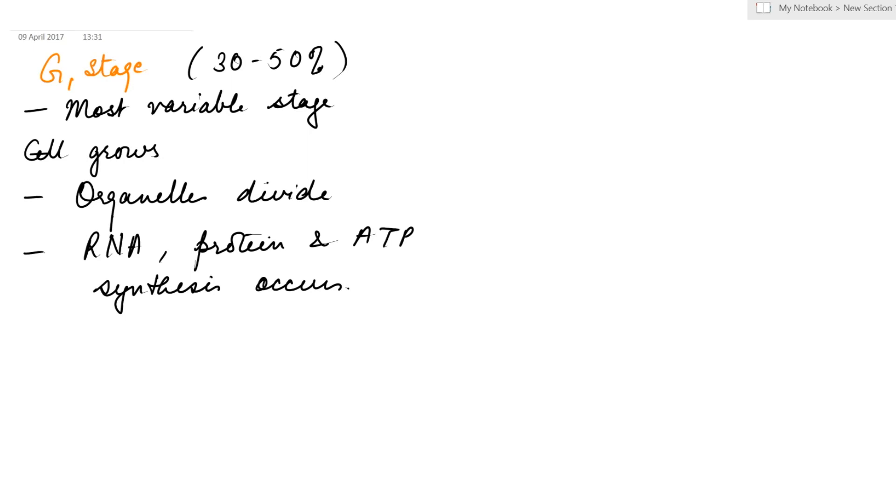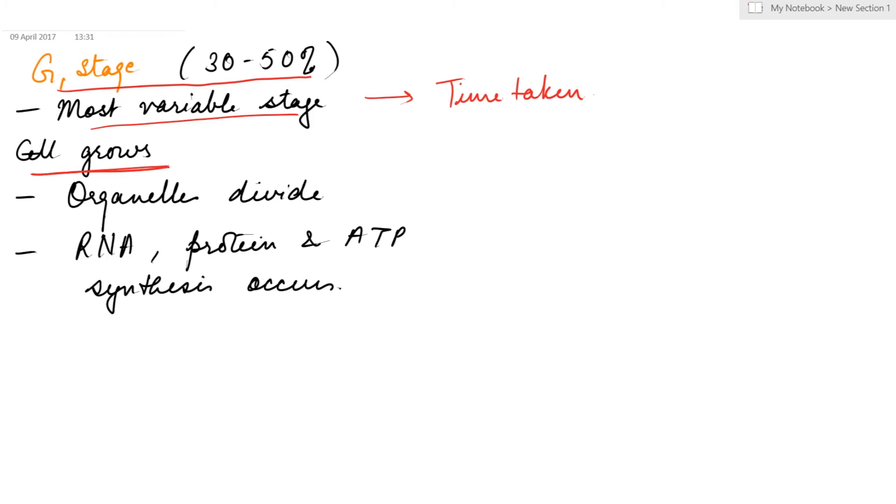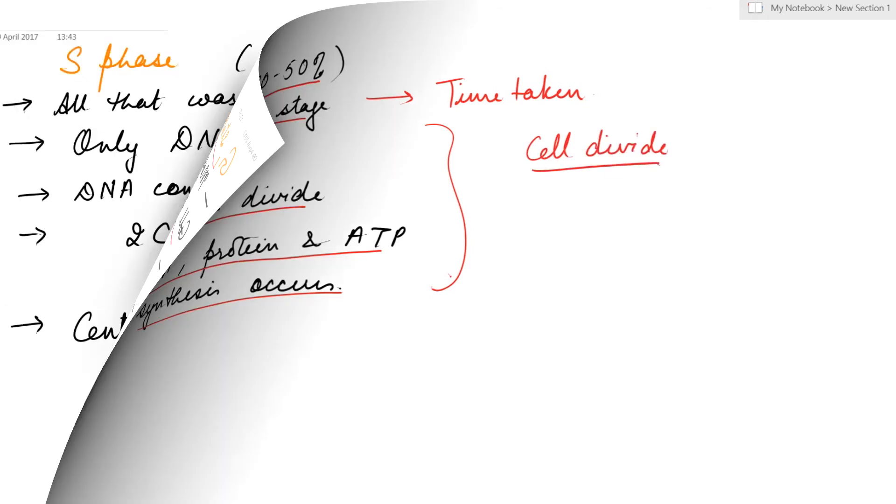G1 stage occupies 30 to 50 percent of the cell cycle. It is the most variable stage with regard to time taken. A cell which is frequently dividing has a smaller G1 stage and a cell which less frequently divides has a larger G1 stage. During G1 stage, the cell grows, organelles divide, RNA protein and ATP synthesis occurs, and all that are required for the cell to divide are synthesized.